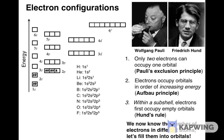For neon, atomic number 10, the first nine electrons occupy the same orbitals as for fluorine, and according to the Aufbau principle, the tenth electron also goes into the 2p subshell, occupying the only orbital in this subshell that does not yet have two electrons. The electron configuration for neon is then 1s² 2s² 2p⁶.